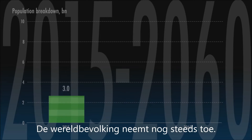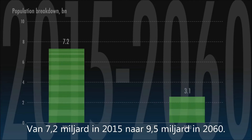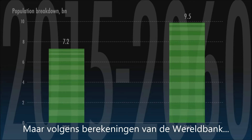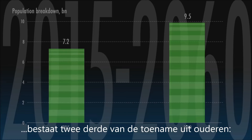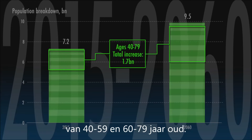The size of the Earth's population is still rising, from 7.2 billion in 2015 to 9.5 billion in 2060. But, according to calculations by Emi Suzuki and Wolfgang Fengler of the World Bank, two-thirds of the extra 2.2 billion people will come from the older age groups, those aged 40 to 59 and between 60 and 79, not from the younger.